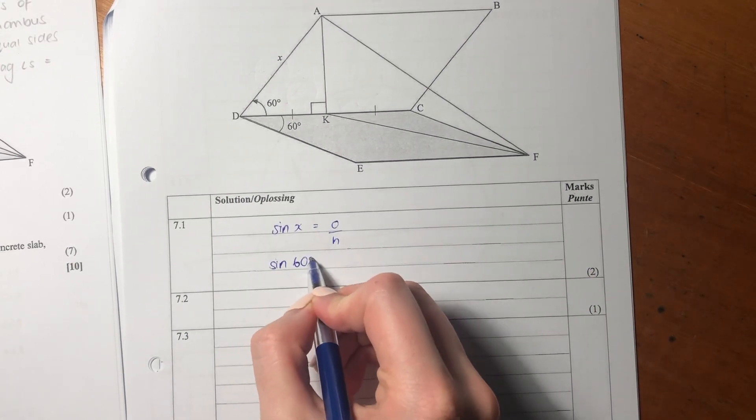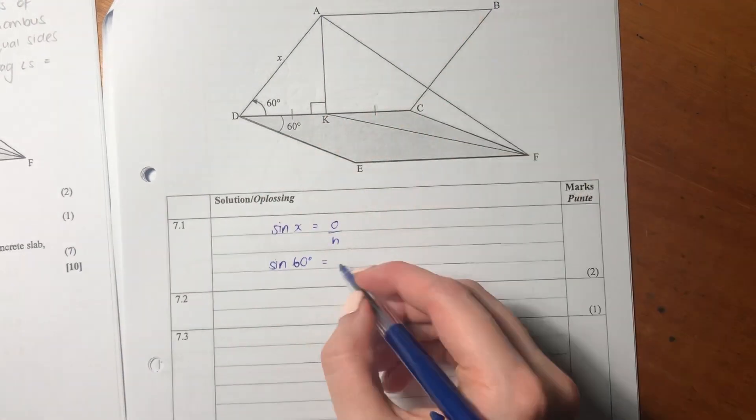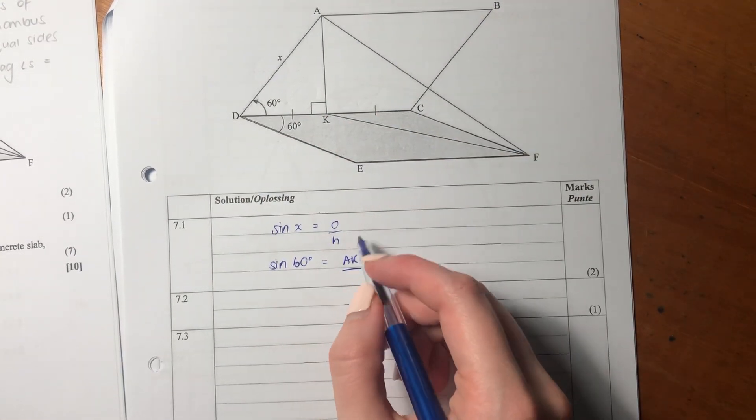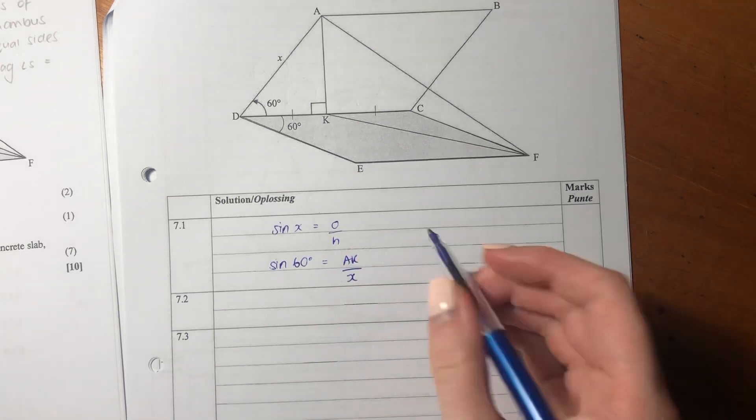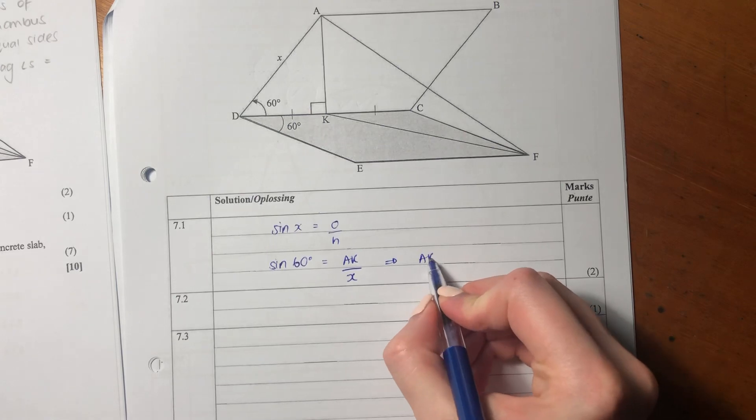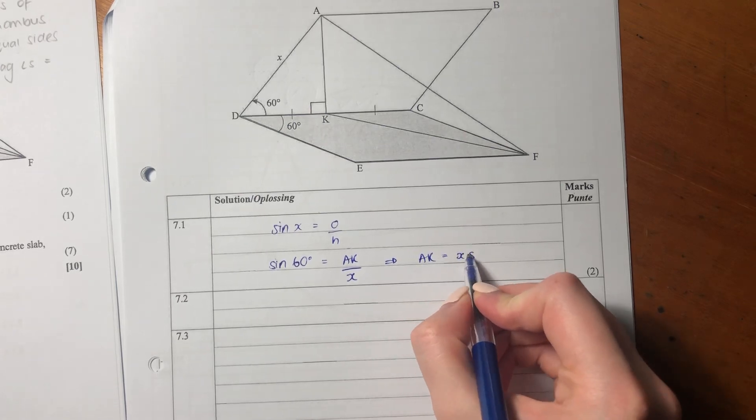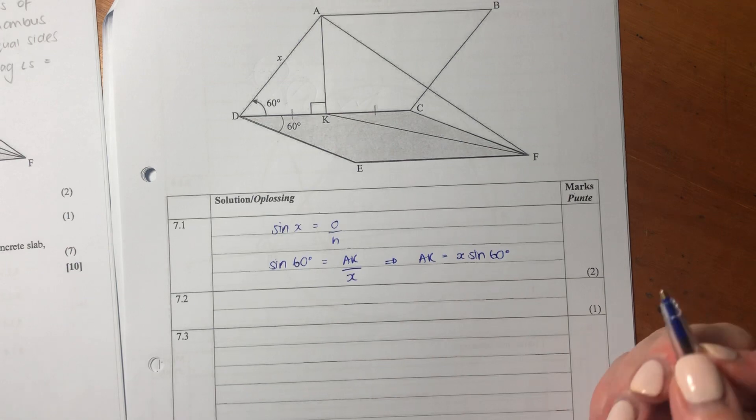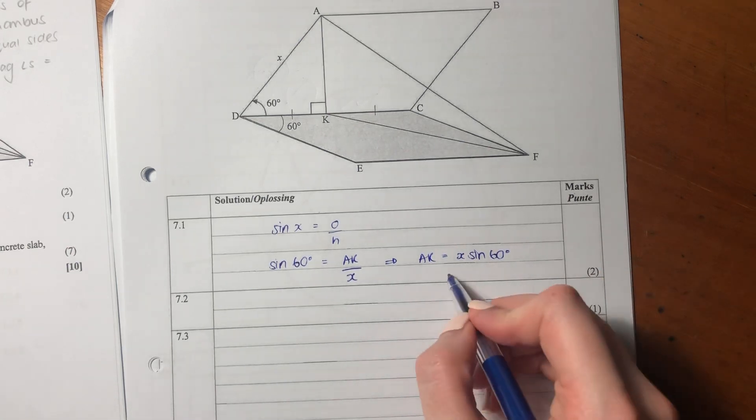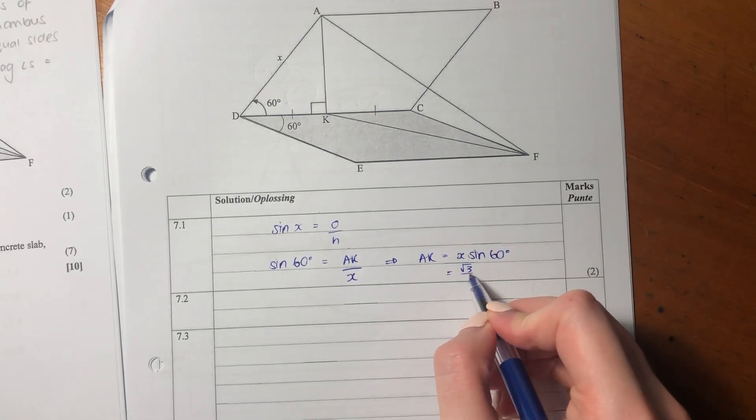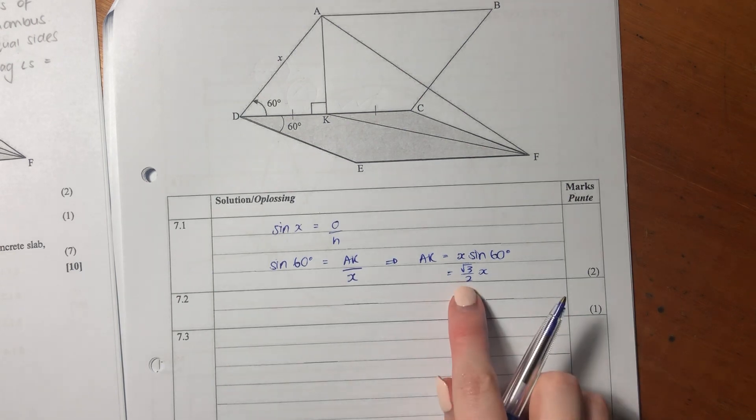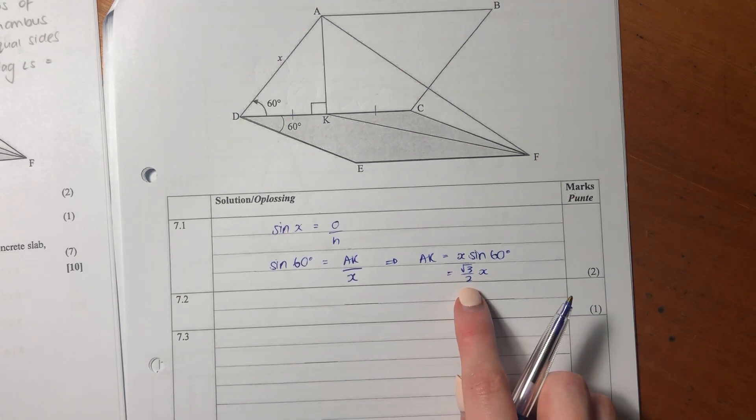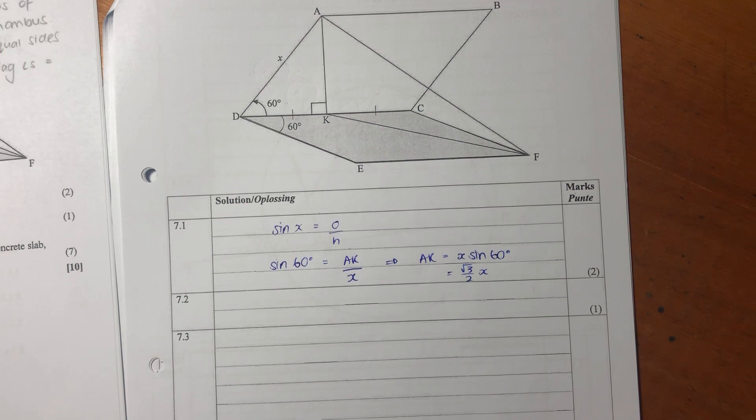In this case, we have sine 60. Opposite is AK and our hypotenuse is X. If we do a little shuffle, we get AK equals X times sine 60. You should know that sine 60 is square root of 3 over 2 because this is your special angles. So we found the answer in terms of X.